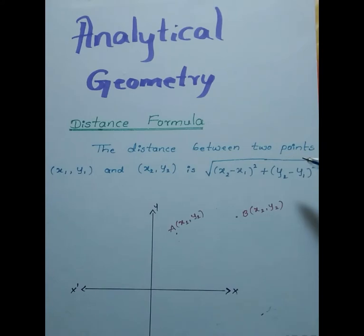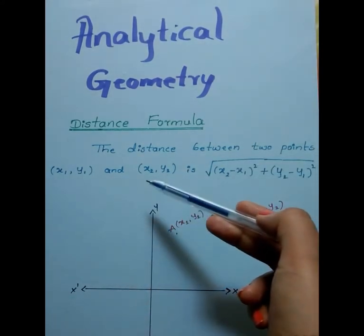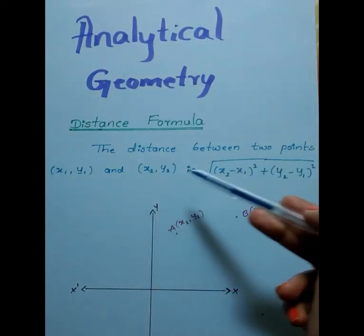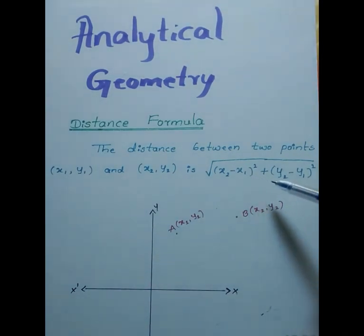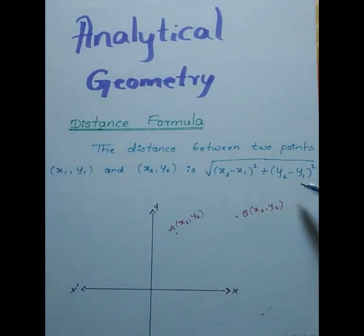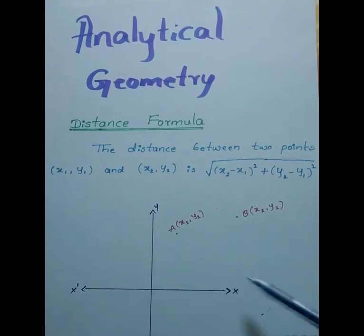The distance between two points, namely (x1, y1) and (x2, y2), is the square root of (x2 minus x1) whole square plus (y2 minus y1) whole square. To understand this, take a Cartesian plane.